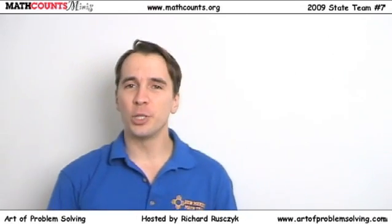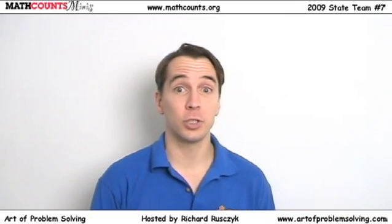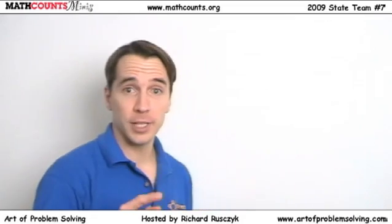Today we're going to solve a geometry problem from the 2009 state team test. The problem is this: we have a triangle with two angles, 30 degrees and 45 degrees, and the side opposite the 30 degree angle has a length 6 times the square root of 2, and we're asked to find the sum of the lengths of the other two sides.